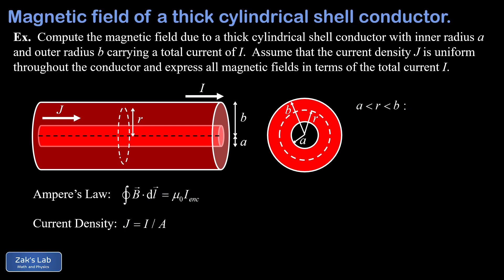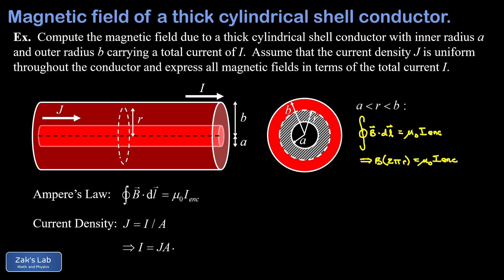Now we look at the really interesting case: a < r < b, where the Amperian loop is inside the conductive material. The left-hand side of Ampere's law again gives B times 2πr for all the same reasons. The right-hand side is more complicated because our Amperian loop only captures part of the total current I. We've shaded the part of the conductor inside the loop that actually carries current — excluding the hollow center. To find the enclosed current, we use J = I/A rearranged as I_enclosed = J times the relevant cross-sectional area.